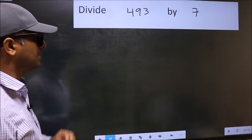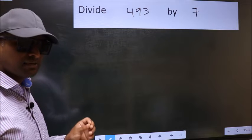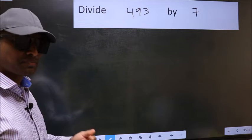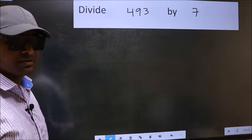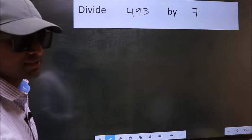Divide 493 by 7. While doing this division, many make this mistake. What is the mistake? I will let you know, but before that, we should frame it in this way.